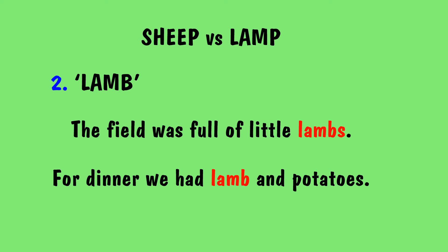The meat of an adult sheep is called mutton. But this meat is less common in Britain and America than lamb. Don't use 'sheep' to refer to the meat of a sheep.